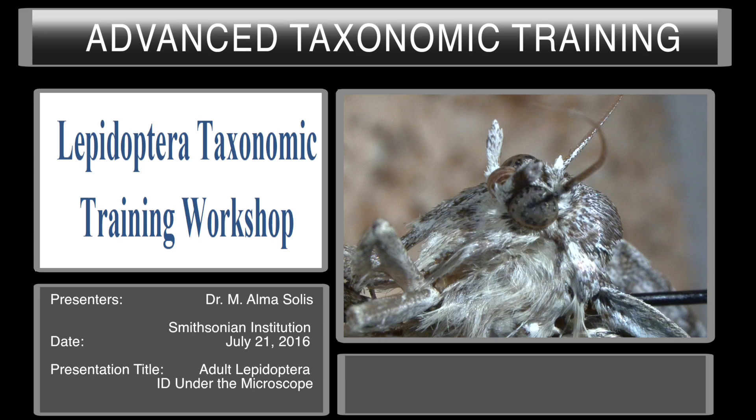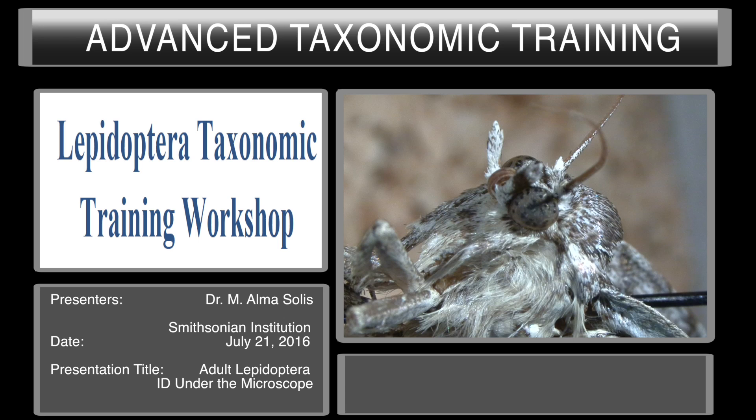When I get a moth, whether it has scales or it doesn't have scales, I can quickly get it to one of four major superfamilies based on the scales or nose scales at the base of the proboscis and based on where the tympanol organ is.